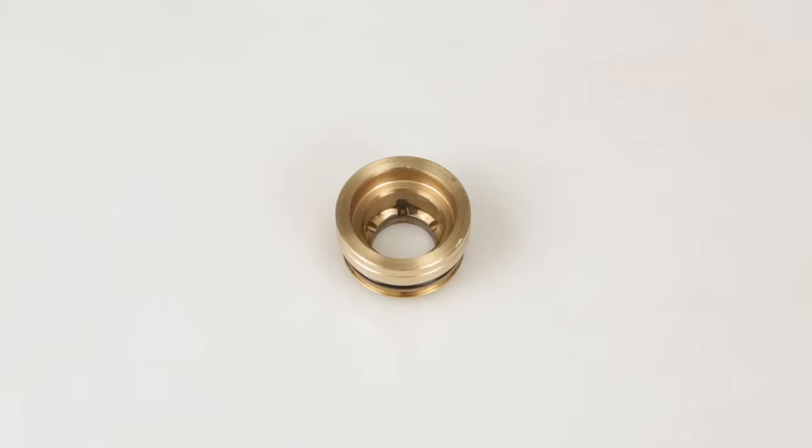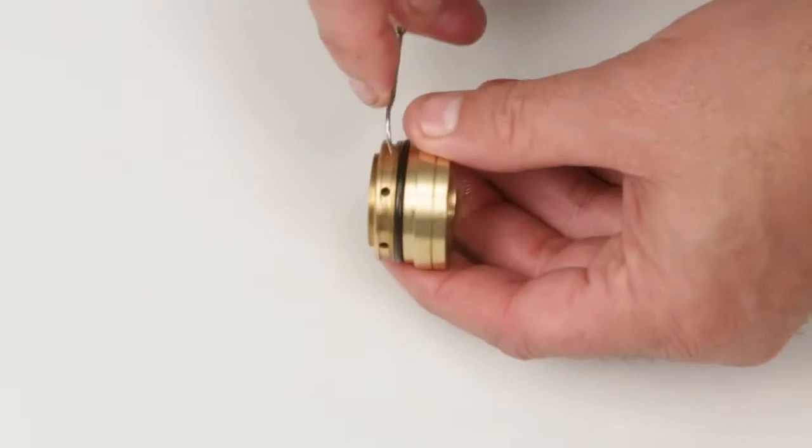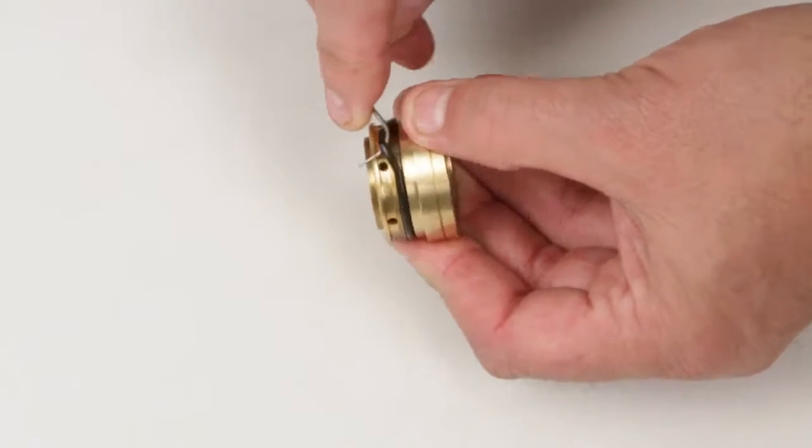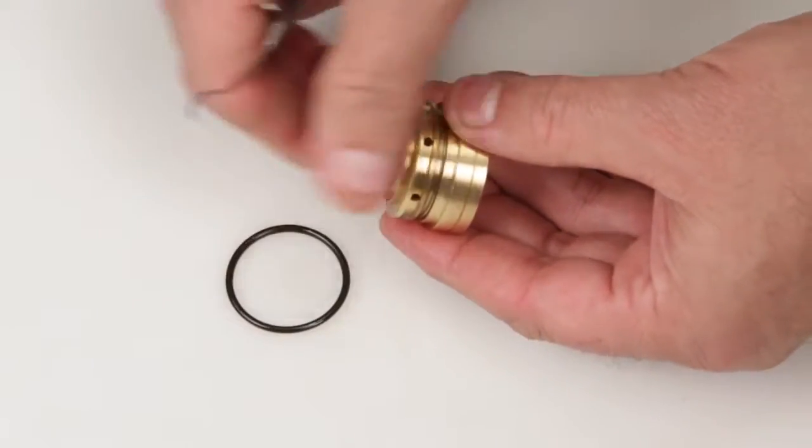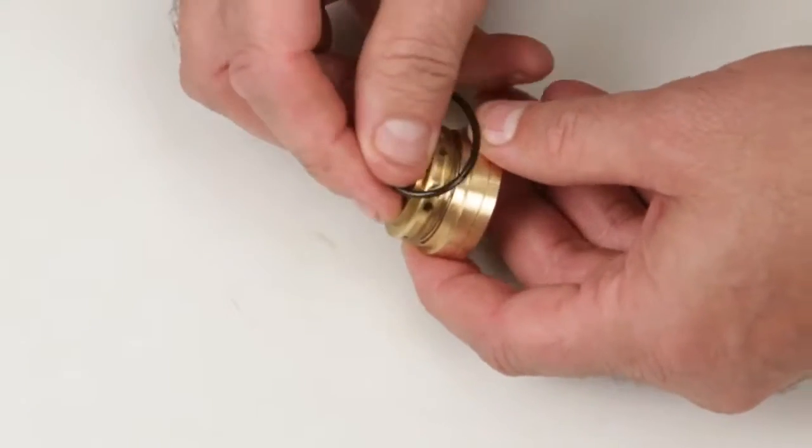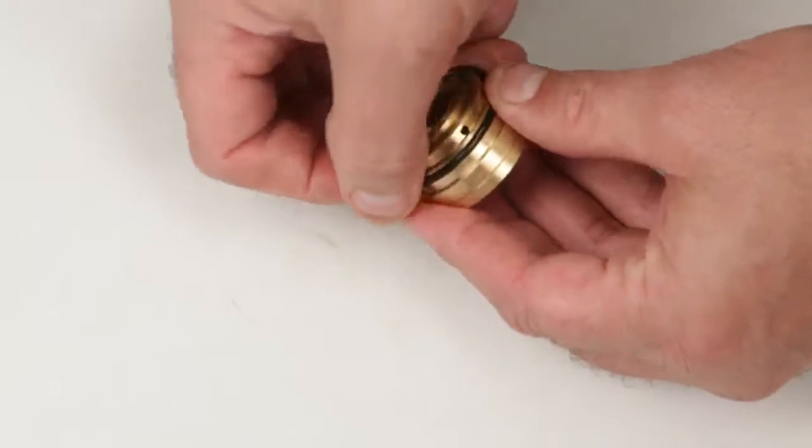Before installing the seal case, you must first replace the O-ring included in your seal kit. Using a small screwdriver or pick, reach under the O-ring and remove from the groove. Replace with the new O-ring included in the seal kit.